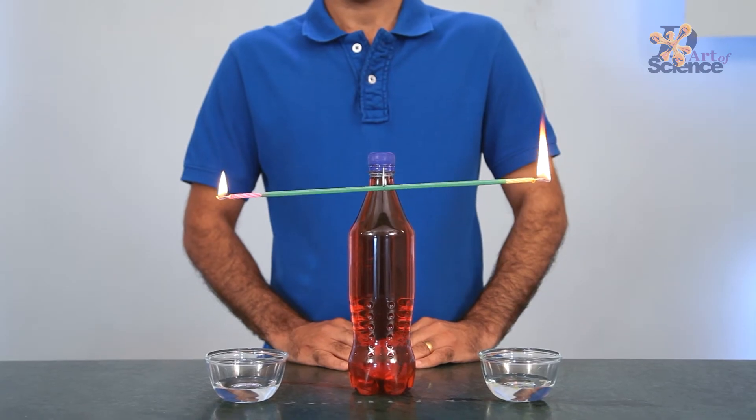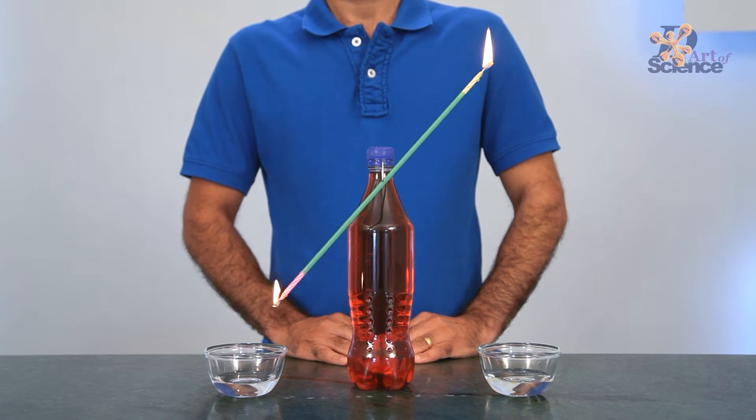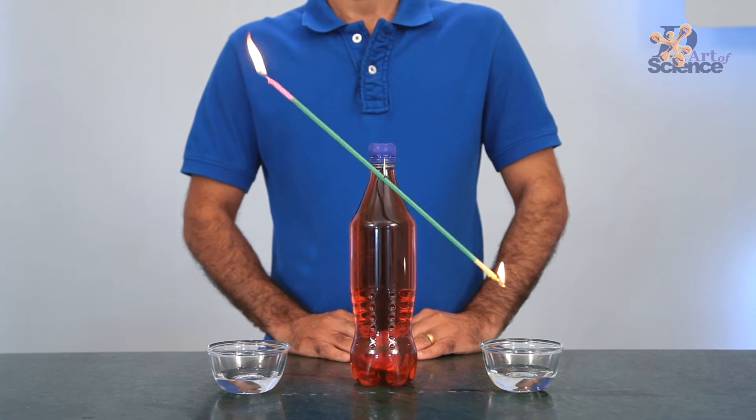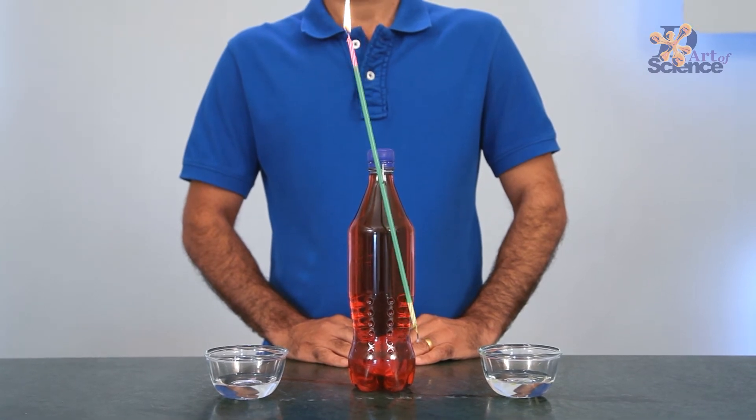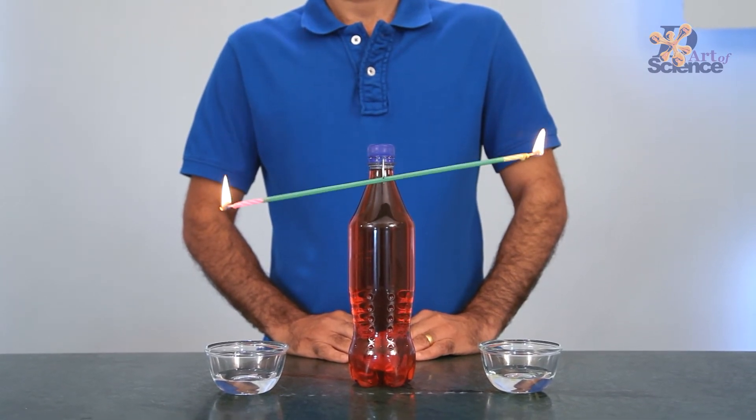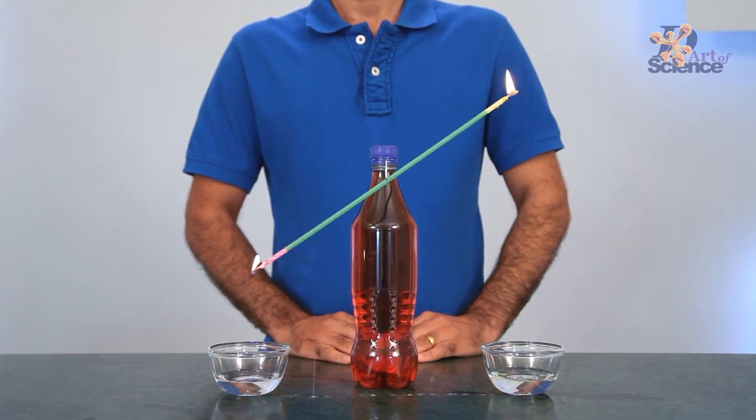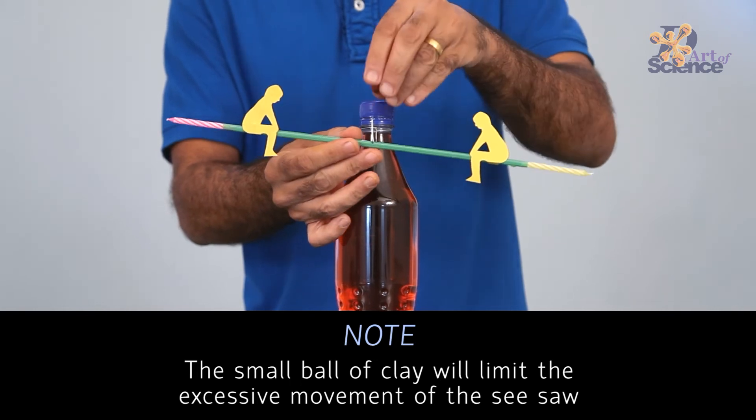Now the wax in candle B burns off faster than candle A because its flame is closer to the body of the candle. So this causes wax evaporating, dripping, and making candle B light. So now this will go up and candle A comes back down.